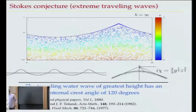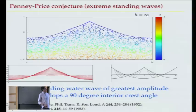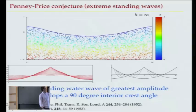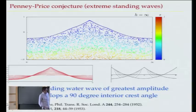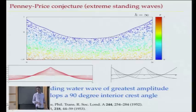For the dynamic problem, this is conjectured by Penny and Price. They had a similar idea: their conjecture is that a standing wave would form a 90-degree angle, forming the corner periodically — just for that instant when it reaches maximum amplitude — and then becoming smooth again. This was conjectured in 1953, also doing asymptotic expansions.